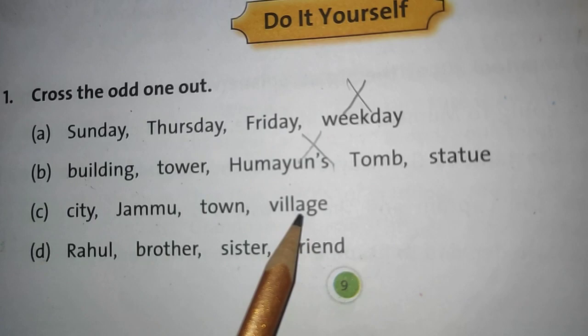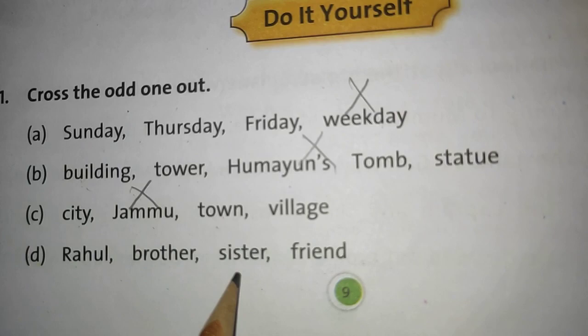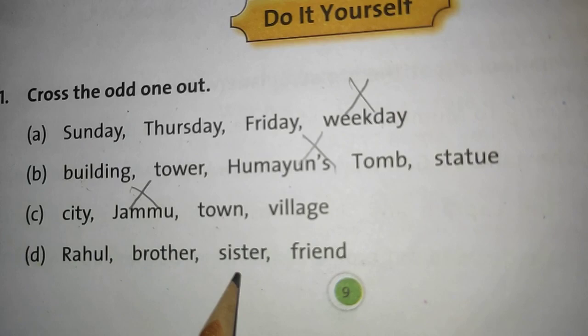City, Jammu, town, village — these are all the same type, but Jammu is a proper name — it's the odd one out, so cross it. Rahul, brother, sister, friend — these are all relatives, but Rahul is a name — so Rahul is the odd one out.